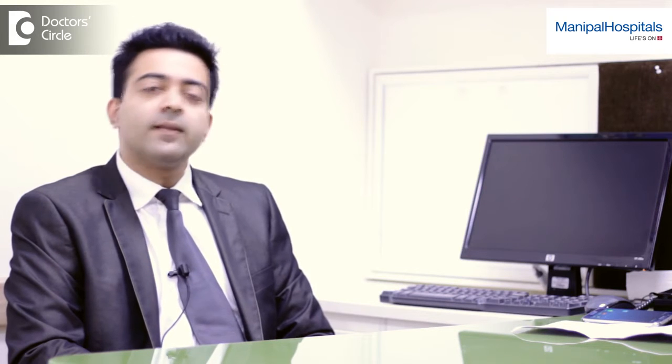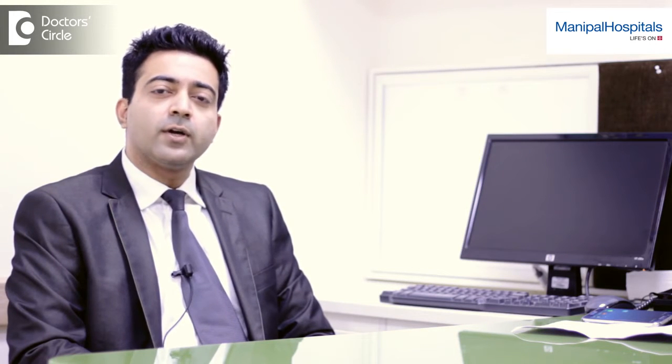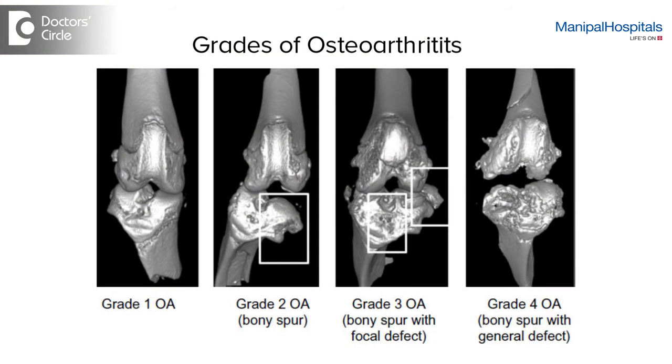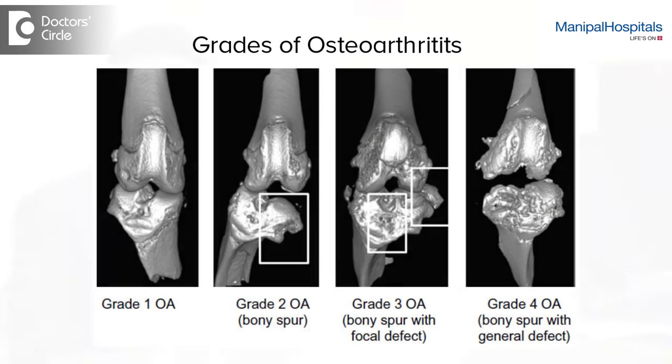The cause of pain in arthritis mainly depends on the condition or the pathology we are dealing with. For example, if you are talking about osteoarthritis, which is age-related, it is mainly related to the wear of the cartilage which causes pain. We classify it as grade 1 to 4 — grade 1 starts from diminution of joint space to grade 4, what we call bone on bone, where the pain becomes severe and it can often be continuous.